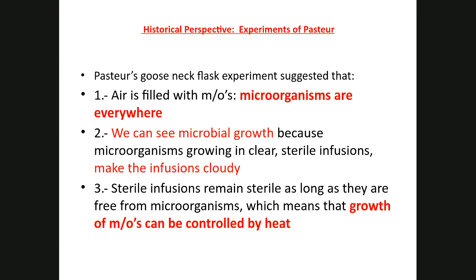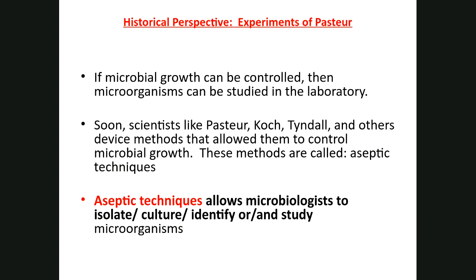Another importance was that the growth of microorganisms can be controlled with heat — meaning we can kill them with heat. That's important because if you want to study something, you need to be able to control it. Once scientists figured out how to control growth, how to stop it and start it again, they were able to study microorganisms. Because microorganisms are everywhere, scientists had to develop aseptic techniques — you should definitely know what aseptic techniques are.